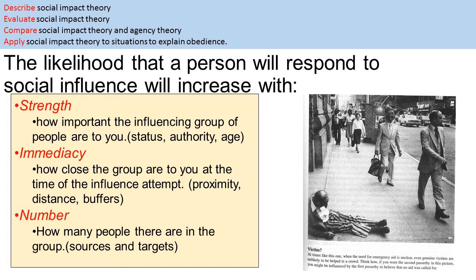Latane puts this in a mathematical formula: F equals S times I times N. The higher those numbers are, the higher the impact on obedience levels. S is the strength of the group — how important the person or group trying to influence you is to you — so their status, whether they're authority figures, whether they're older than you. For example, your best friend will have a higher strength than a stranger on the street.